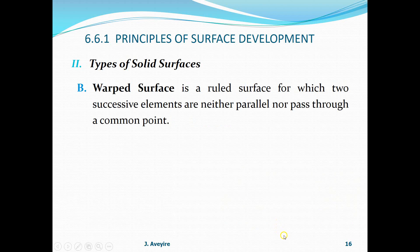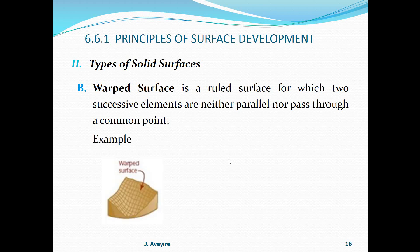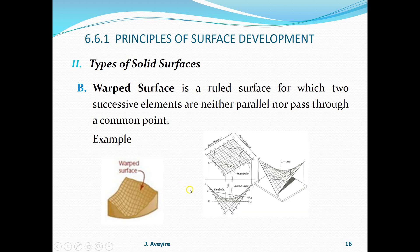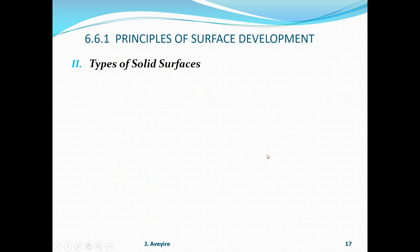Warped surface is a ruled surface for which two successive elements are neither parallel nor pass through a common point - the opposite of what we have for plane and single curved surfaces. Examples of warped surfaces exist, but we will not take these as part of this course.